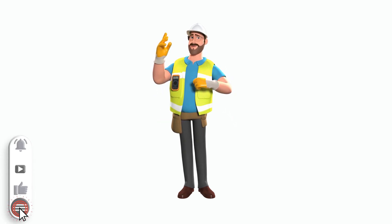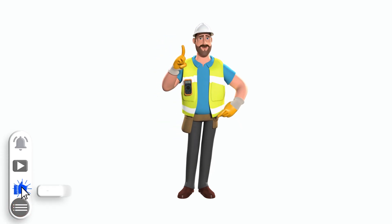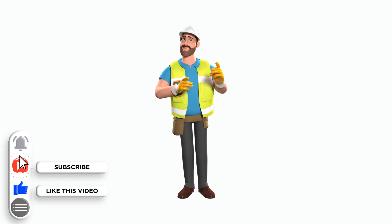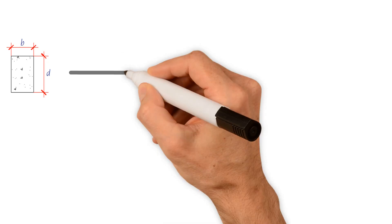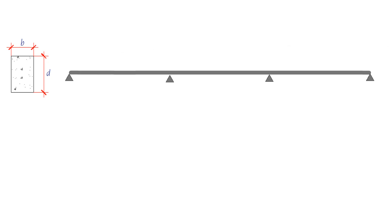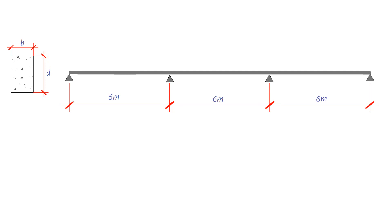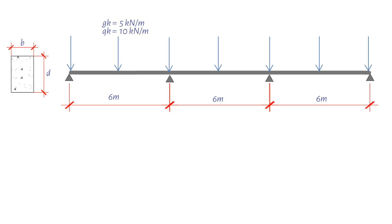Welcome back to the channel. In today's video, we will use a worked example to show you how you work out the initial size of a concrete beam. We have continuous beams which have an effective span of 6 meters and support a dead load of 5 kilonewtons per meter and an imposed load of 10 kilonewtons per meter. We need to determine the suitable dimensions for the effective depth and width of the beam.